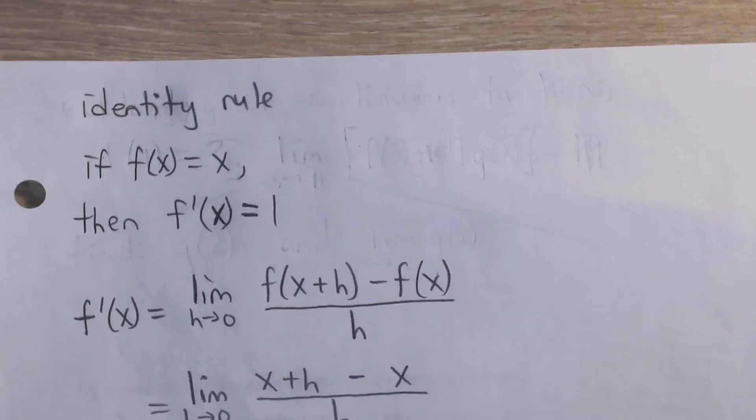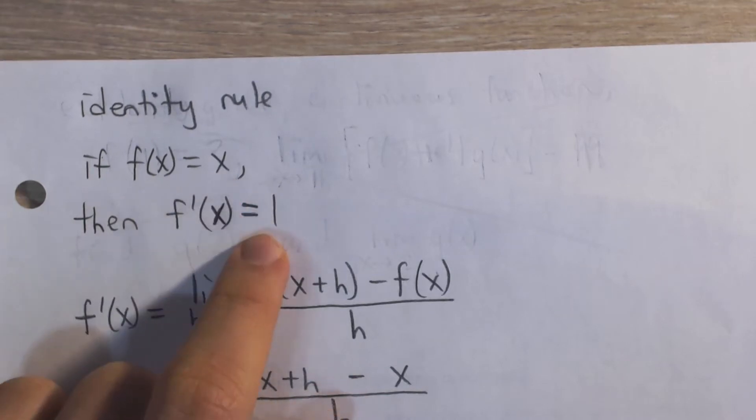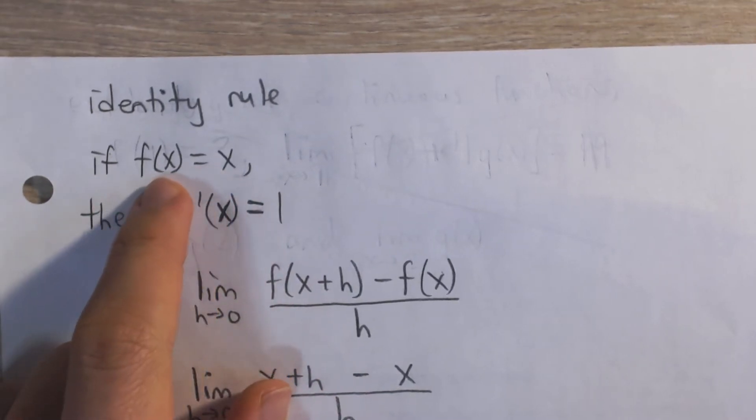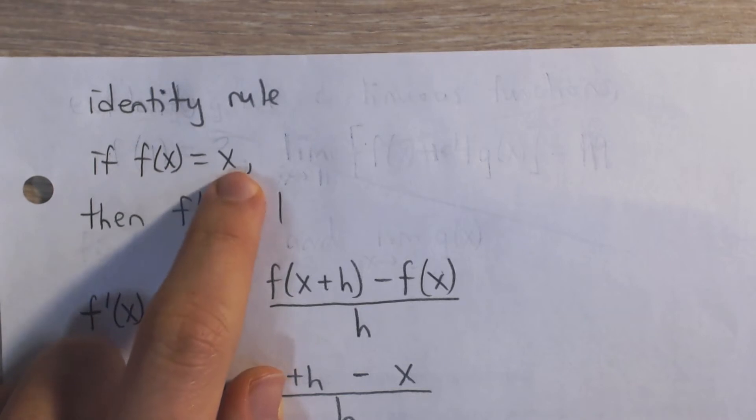Okay, here I'm going to prove the identity rule for derivatives, which means that the derivative of just x is 1. So if you have a function that wherever you input x, you're going to get out x,